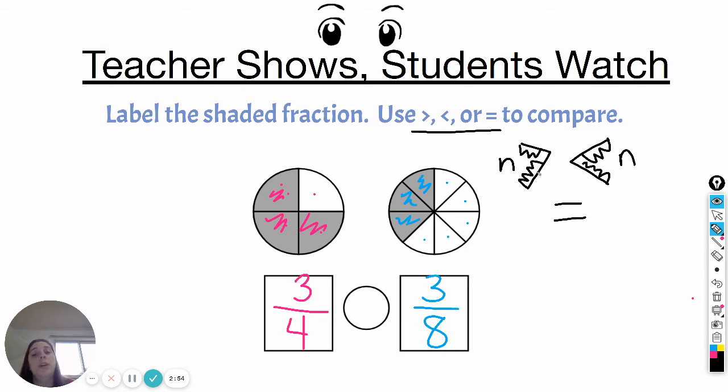That means we need this symbol here that's going to eat the bigger number, which is on this side. So we would say this as three-fourths is greater than three-eighths.